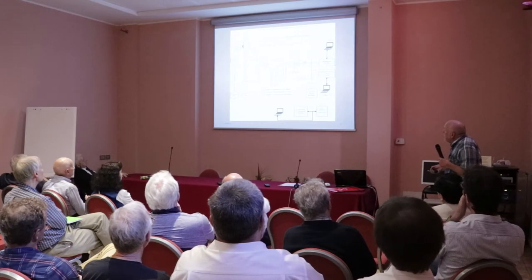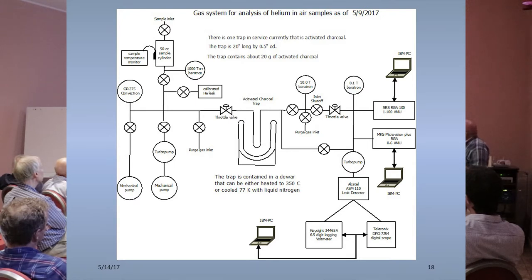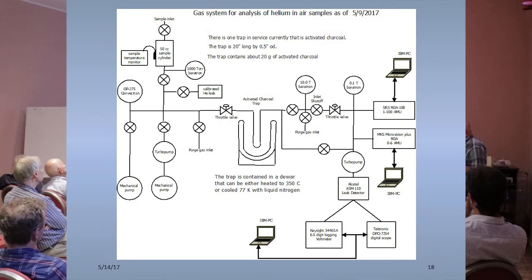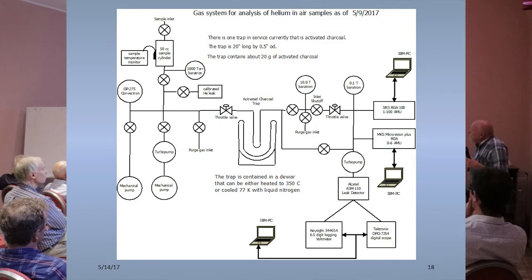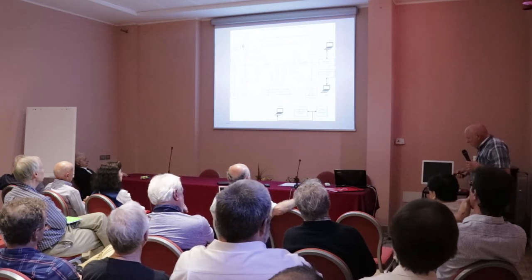We now have the final configuration of the system we're currently operating with. The only difference from the previous one is that we've added a calibrated leak. We can make it put helium into the system at a constant rate at the same point that our regular samples go in, which has two effects: we can verify the leak detector is operating properly by tuning it for mass 4 and sensitivity, and it provides a method of doing calibration. We've eliminated using the digital scope and do all the data with the six-and-a-half-digit voltmeter.